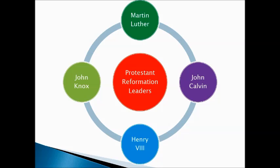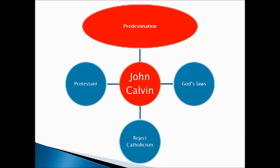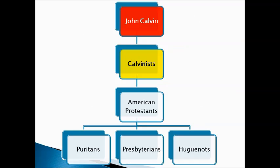Besides Martin Luther, other Protestant Reformation leaders include John Calvin, Henry VIII, and John Knox. John Calvin teaches the idea of predestination — that it is predetermined before your birth whether you will go to heaven or hell. He also teaches his followers to practice God's laws and to reject Catholicism. Under John Calvin, you get what are called the Calvinists, and eventually some American Protestants who are the Puritans, the Presbyterians, and the Huguenots — all following the teachings of John Calvin.